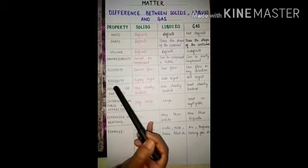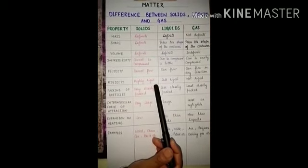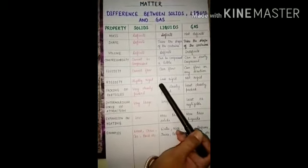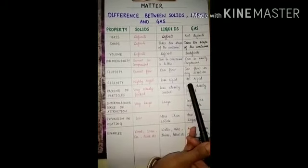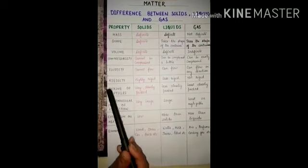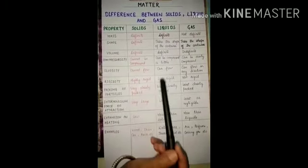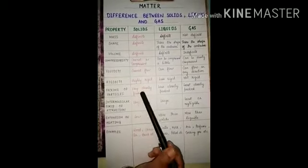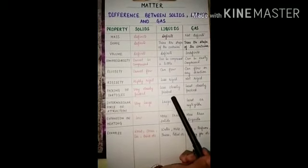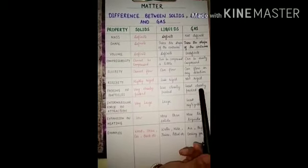The next property is rigidity. Solids are highly rigid — like your table, your chair, your mobile phone; they are all highly rigid. Liquids are less rigid compared to solids. And gases are not at all rigid. The next property is packing of particles, meaning the packing of molecules. In solids, the molecules are very closely packed. In liquids, the molecules are less closely packed. And in gases, they are least closely packed because the molecules are very far from each other.